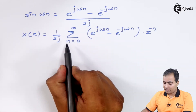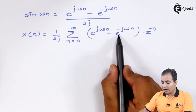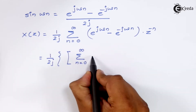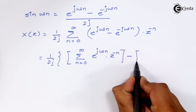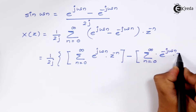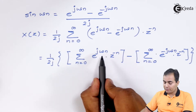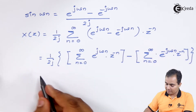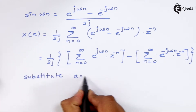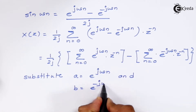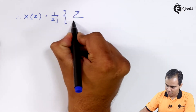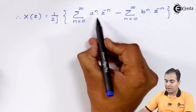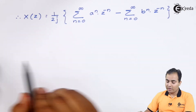We can use the linearity property so that we can find the Z-transform of e^(jωn) and e^(−jωn) separately. I am going to substitute e^(jω) = a and e^(−jω) = b, only to avoid difficulties. I have replaced e^(jω) by a and e^(−jω) by b.